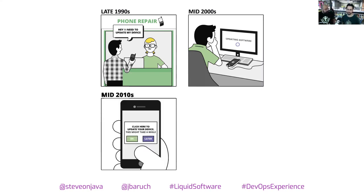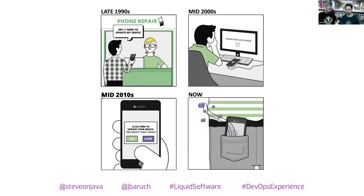Then things changed with the iPhone — a proper operating system with proper software that could actually be updated, though still manually. You had to check every couple of days for a new version, then restart through the whole process. But now it's all automatic, which is very cool because we have a shift in the value of our devices. With a Nokia phone, the next second after you bought it, it was already worth less. But with software being updated automatically, our devices actually appreciate instead of depreciate.